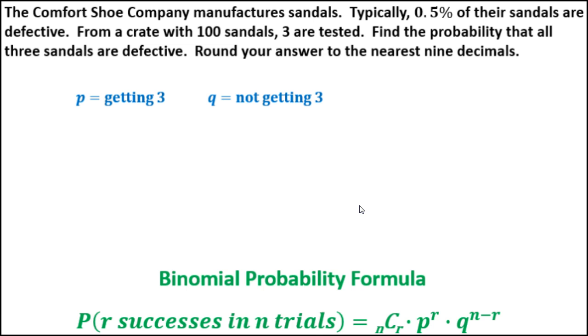P and q - p is the probability of getting three, testing all three and having all three be defective.